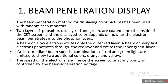The speed of electrons, and hence the screen color at any point, is controlled by the beam acceleration voltage. The beam acceleration voltage decides the speed of the electrons, which decides how deep the electrons penetrate into the two phosphor layers. Depending on which layer is excited, the corresponding color is emitted. This is the beam penetration method, used in random scan monitors.